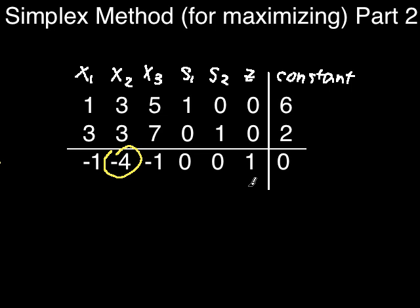You should always discard quotients that are 0 divided by 0 or negative. If all the quotients have to be discarded, no maximum solution exists for the problem. So here, 2 thirds is smaller than 2, so this is the pivot point.